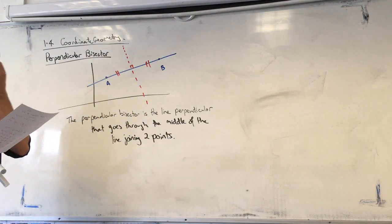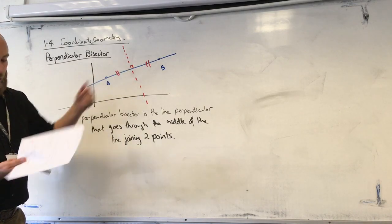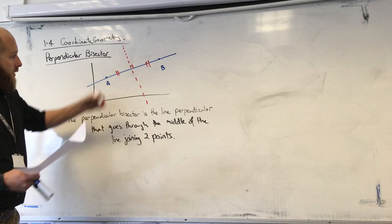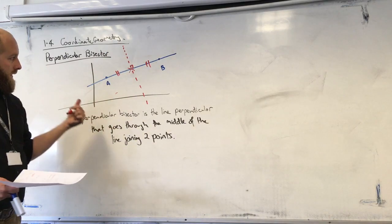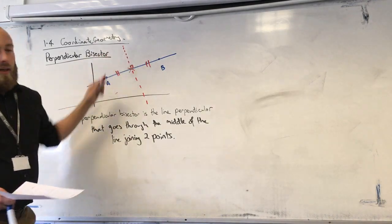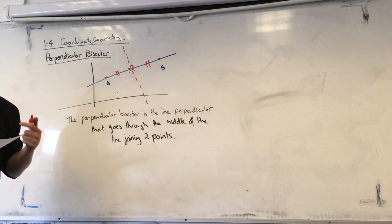How we work it out is we need two separate things. First of all, we need to work out what is the coordinate that this goes through. We need to know what that point is. We also need the gradient, which is going to be the perpendicular gradient to A and B. With both of those tools, we can work out what the perpendicular bisector is.